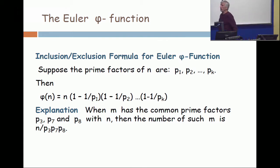If you are able to factor n and determine its prime factors. So if the prime factors of n are p₁, p₂, up to some pₖ, then the Euler-phi function, φ(n), is n times (1 - 1/p₁) times (1 - 1/p₂), etc. And here's the explanation.